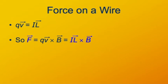Notice here what I've done is I've not made the current I a vector; I've made the length of wire L through which it travels a vector. I, a scalar, times L, a vector, gives you a vector which is the same vector as charge q times velocity v.